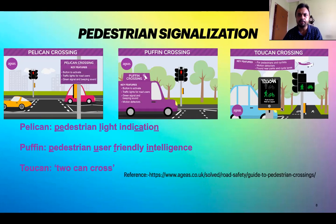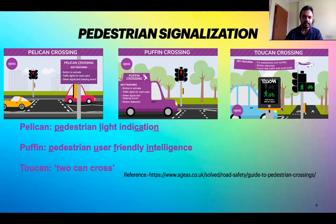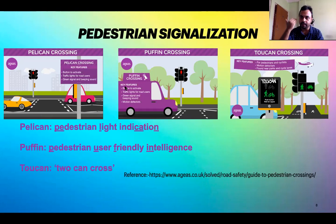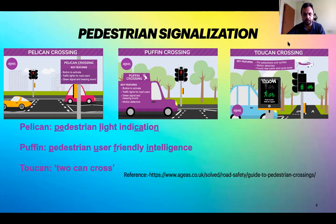In cities like Guwahati, very few places have pedestrian signalization. In many places, people simply wait for the red light for vehicles and then start crossing. However, in many cities we see separate red and green lights for pedestrians — when there is a red light for vehicles there is a green light for pedestrians, and when there is green for vehicles there is red for pedestrians. This helps pedestrians because the signals are right in front of them.